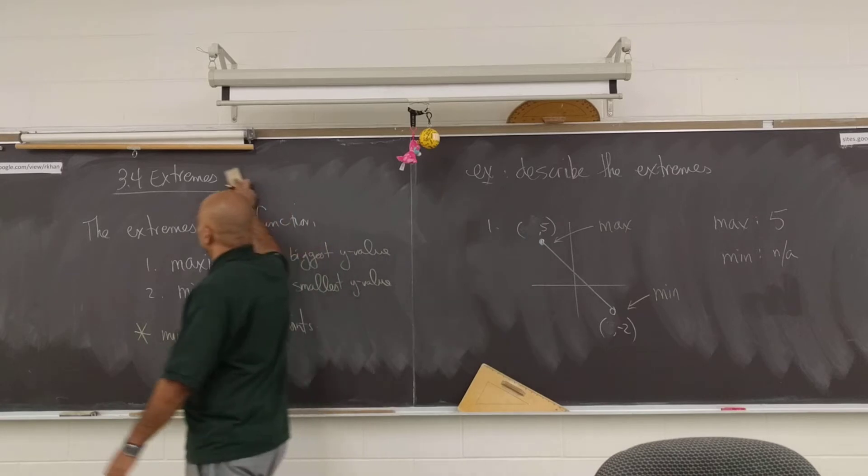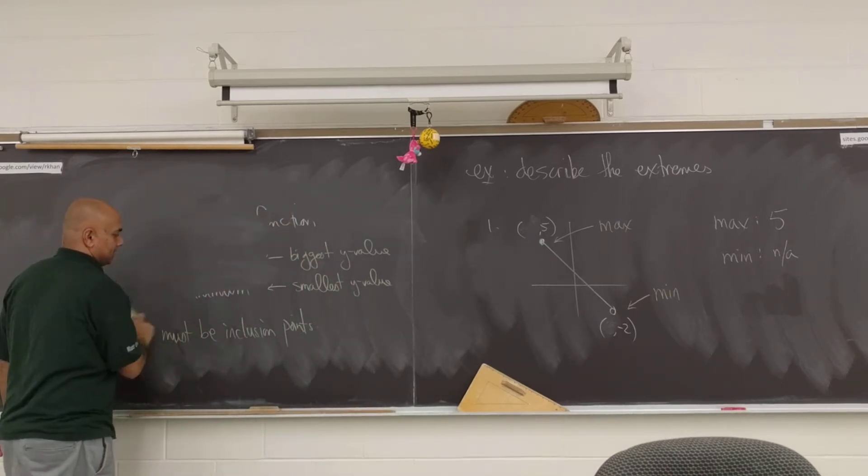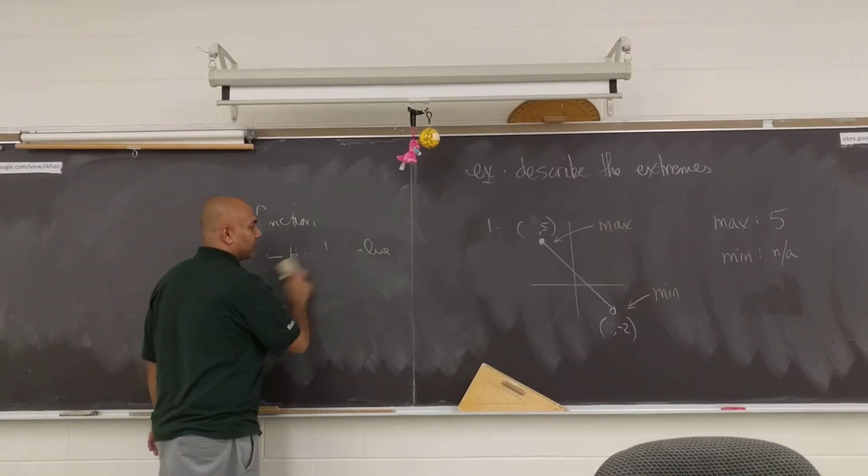Technically, there is no minimum here. Now, if you want to say, but sir, it is negative two, you just have to write negative two with like a this around it. That doesn't make any sense. So, we write n/a.